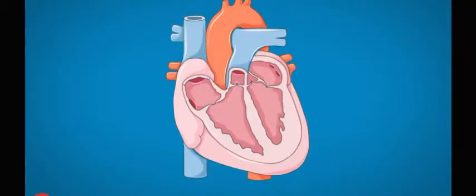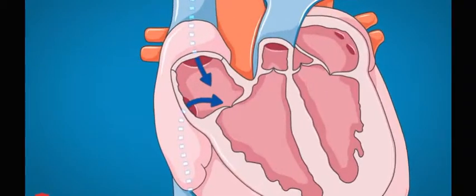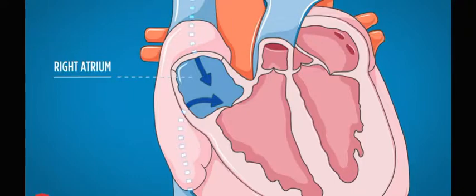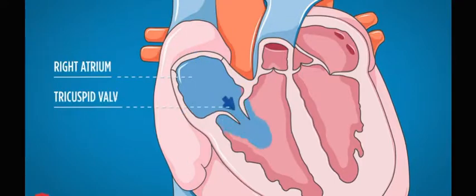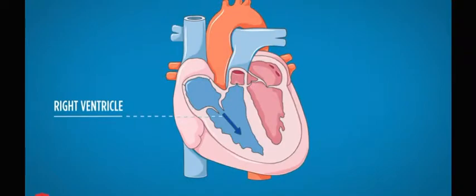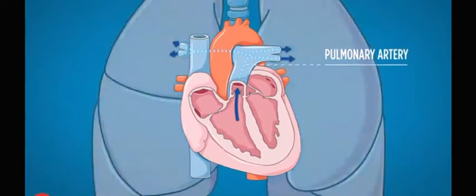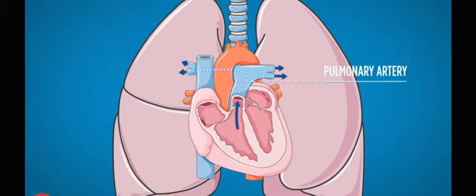Blood returns from the body to the heart via the superior and inferior vena cavae. It first enters into the right atrium, then through the tricuspid valve and into the right ventricle. The right ventricle pumps the deoxygenated blood through the pulmonary artery to the lungs.